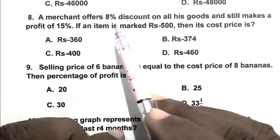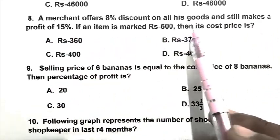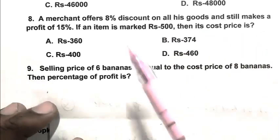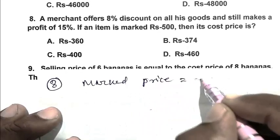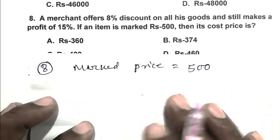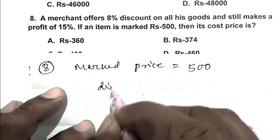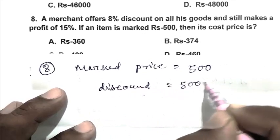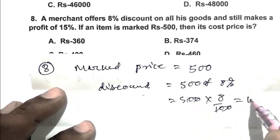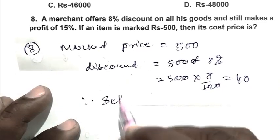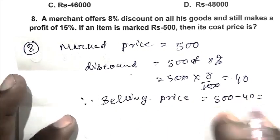Question number eight: A merchant offers 8% discount on all his goods and still makes a profit of 15%. If an item is marked Rs. 500, then its cost price is? So friend, marked price is 500. First he gives 8% discount. So discount equals 500 of 8%, that is 40. So friend, selling price is 500 minus 40, which equals 460.